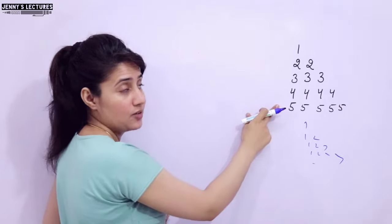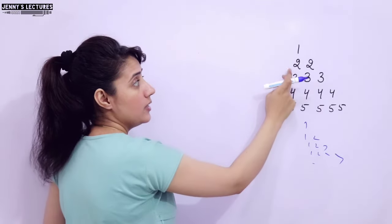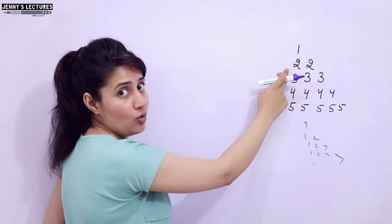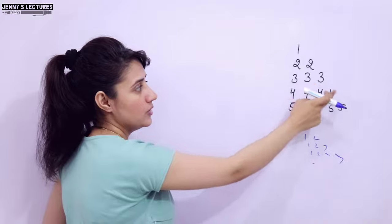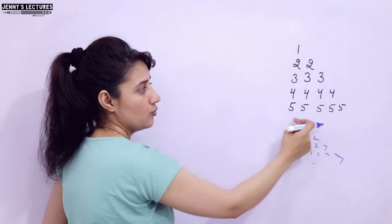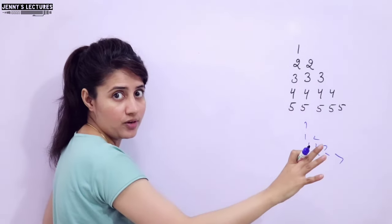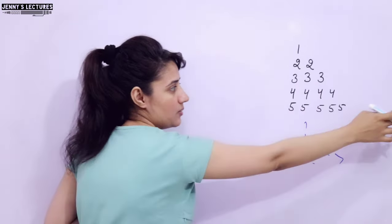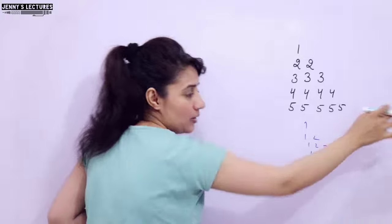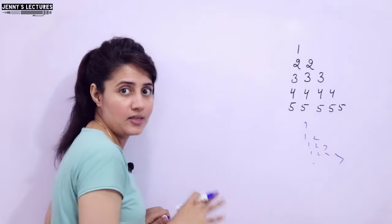But here the pattern is something different. In the first line, 1. In the second line, 2 2. Then 3 3 3. Then 4 4 4 4. Then 5 5 5 5 5. And if you have 6, then 6 times 6. Then 7 times 7, like this.